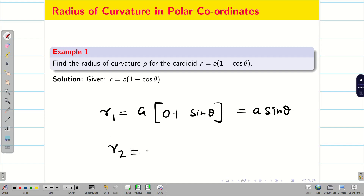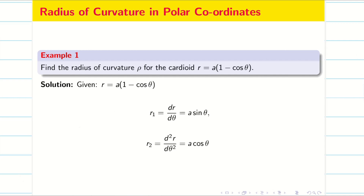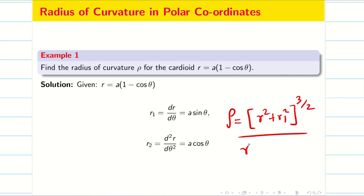Next, r2 = d/dθ of r1. Just as in Cartesian coordinates y2 = d/dx of y1, here r2 = d/dθ of (a·sinθ), giving r2 = a·cosθ. So r1 and r2 are ready. Now we are going to find the numerator and denominator for ρ using the formula (r² + r1²)^(3/2) divided by (r² + 2r1² − r·r2).